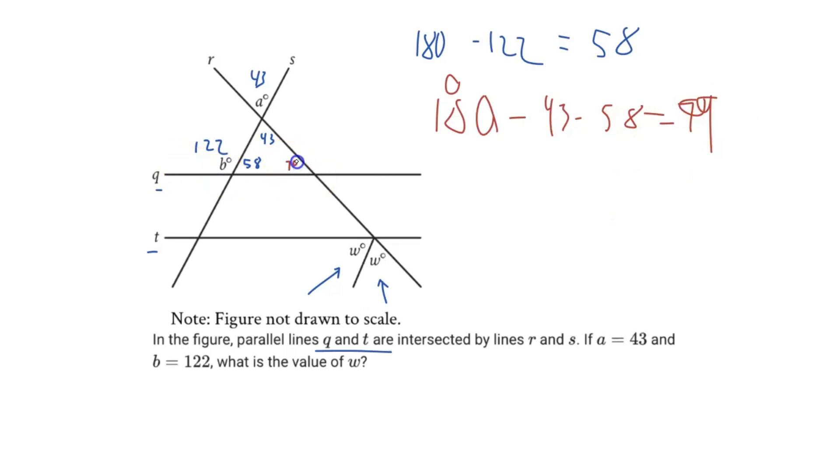I haven't written with the mouse in a while, so it's going to take some time to get back in the flow. So 79 degrees right there. Because we know these two lines are parallel, g and t, we know this angle right here is also going to be 79 degrees.